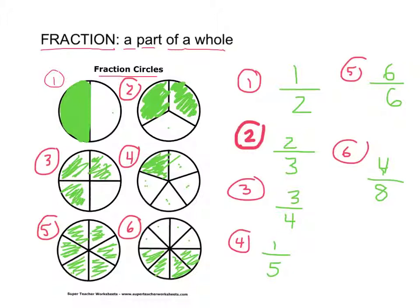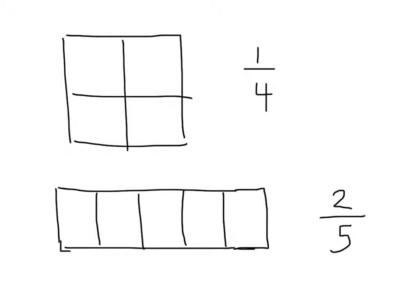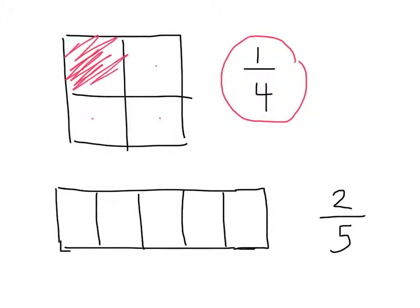Next example — I want you to show me a fraction. The fraction is one out of four. Does this circle have four whole parts? One, two, three, four — yes, it's out of four. How many do I have to color in to make this fraction correct? One. So this shows me one out of four.